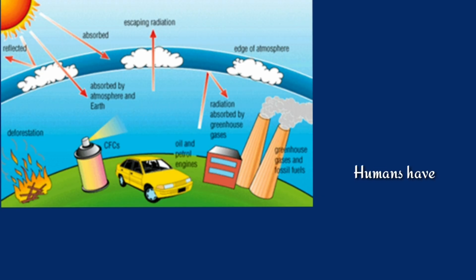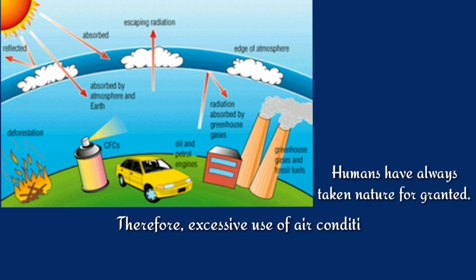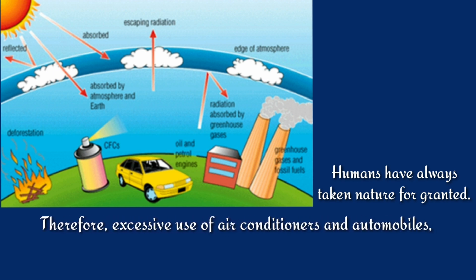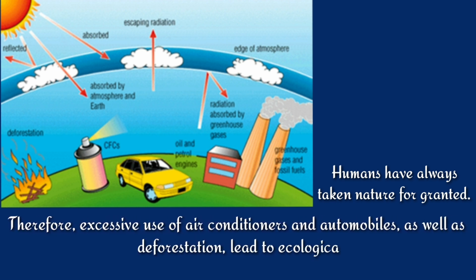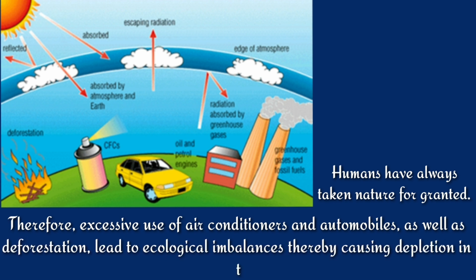Humans have always taken nature for granted. Therefore, excessive use of air conditioners and automobiles, as well as deforestation, lead to ecological imbalances, thereby causing depletion in the ozone layer.